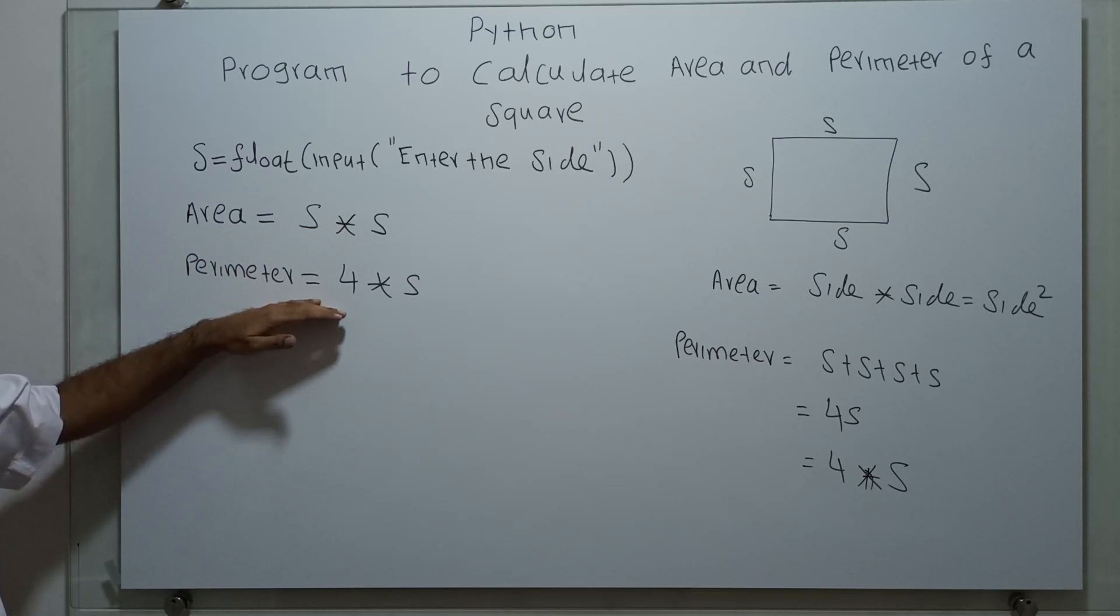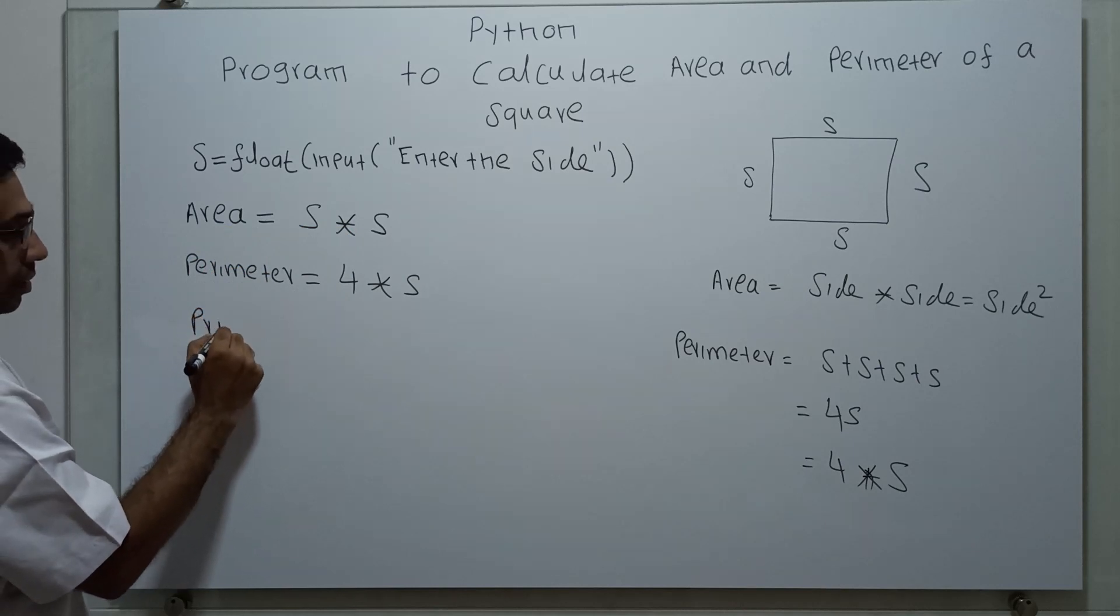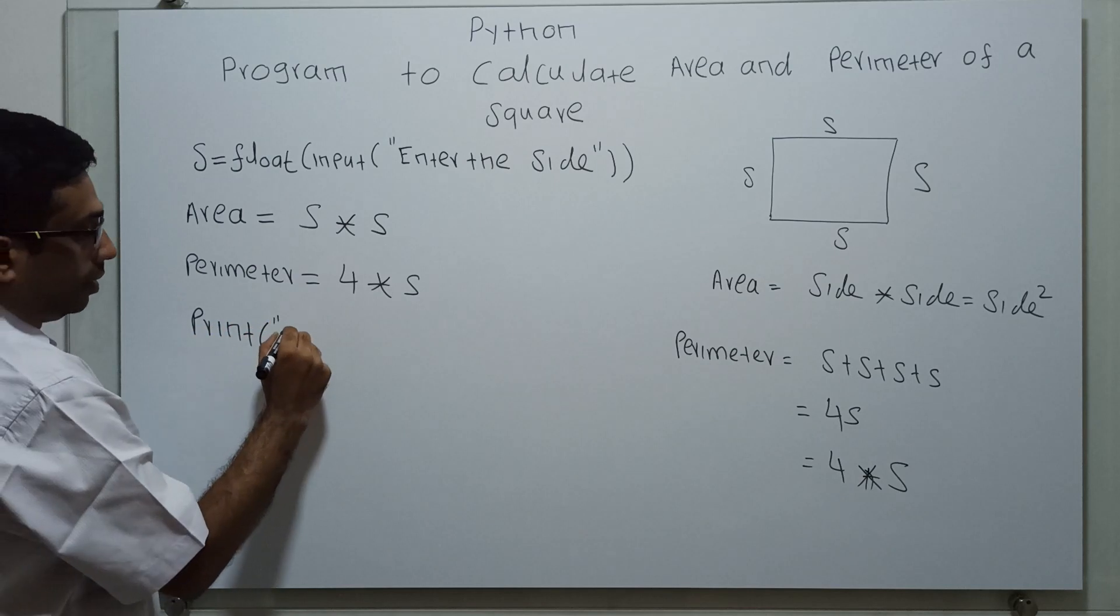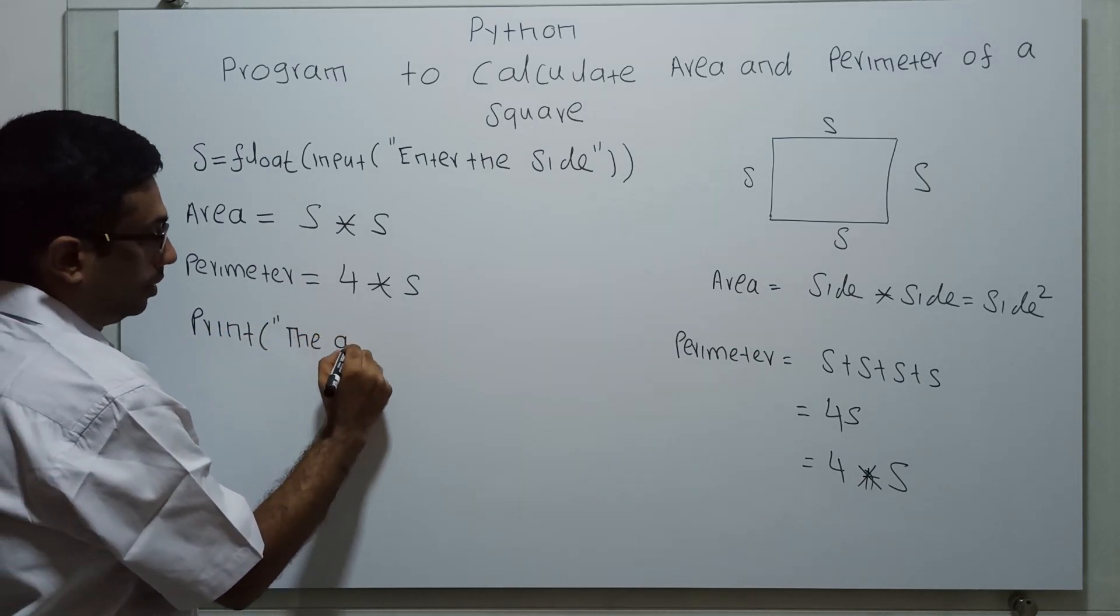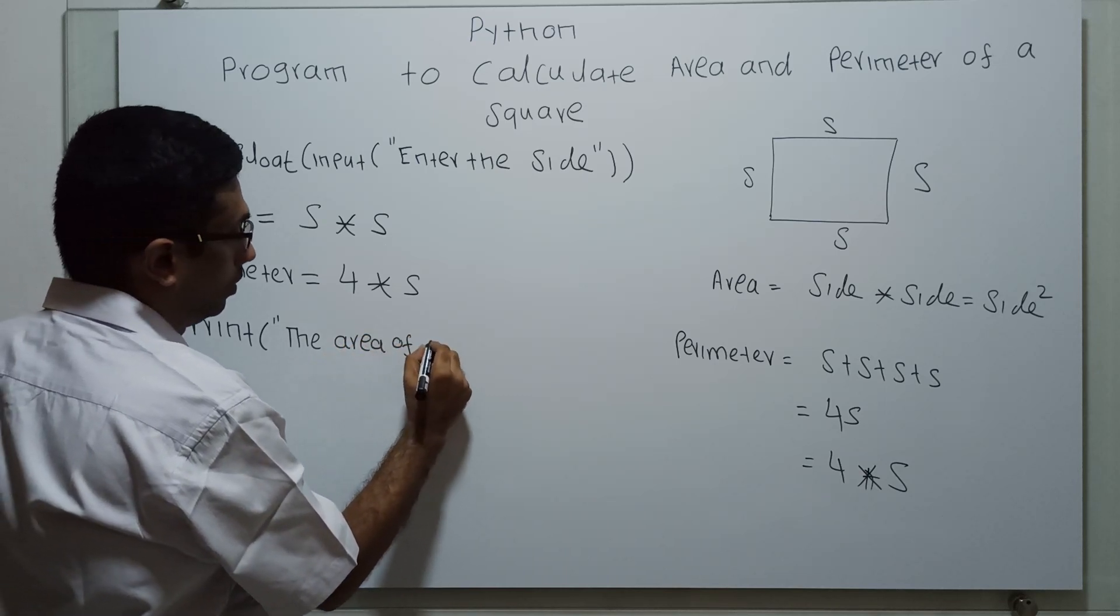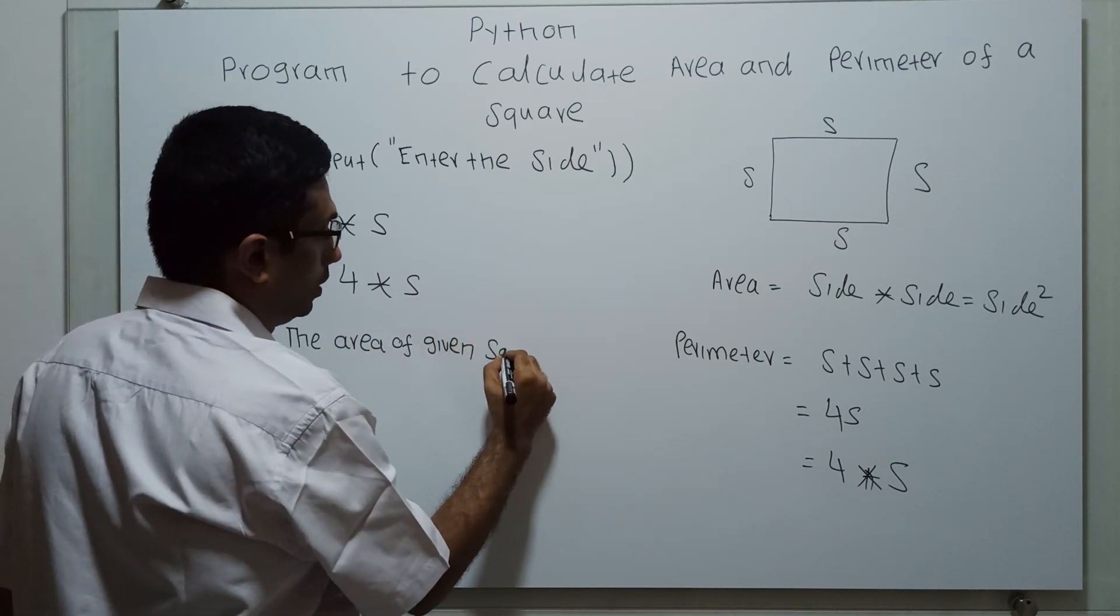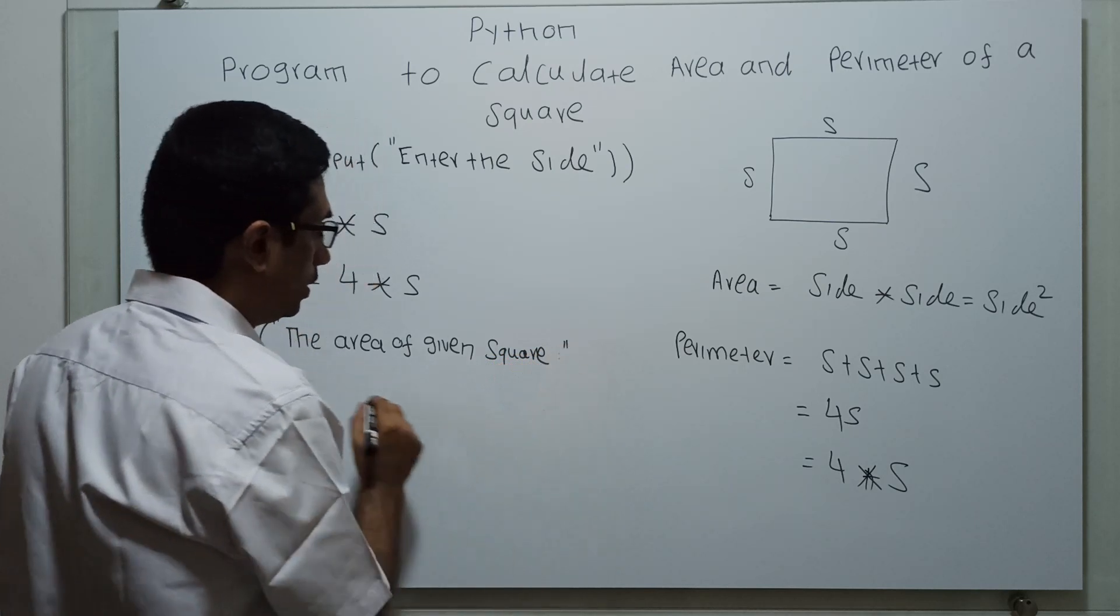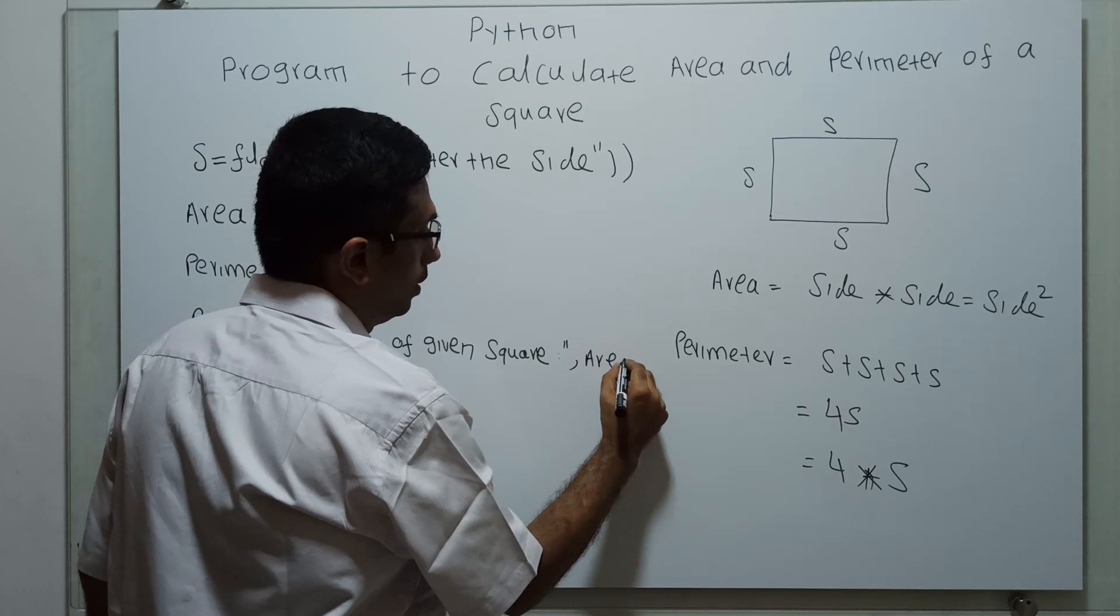Now I am going to print the result. Print the area of given square, square colon. This is a string, followed by the variable area.